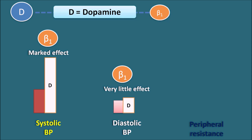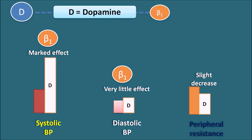Regarding peripheral resistance, dopamine slightly reduces it, attributed to dopamine receptor action. As dopamine produces renal vasodilation as well as coronary vasodilation, it can slightly reduce peripheral resistance.